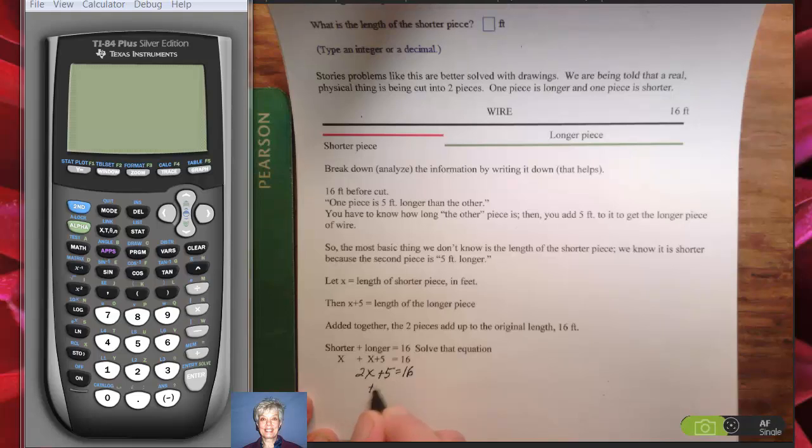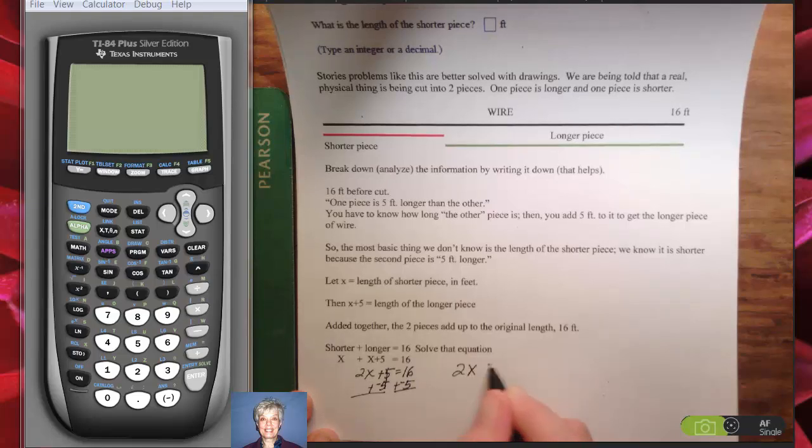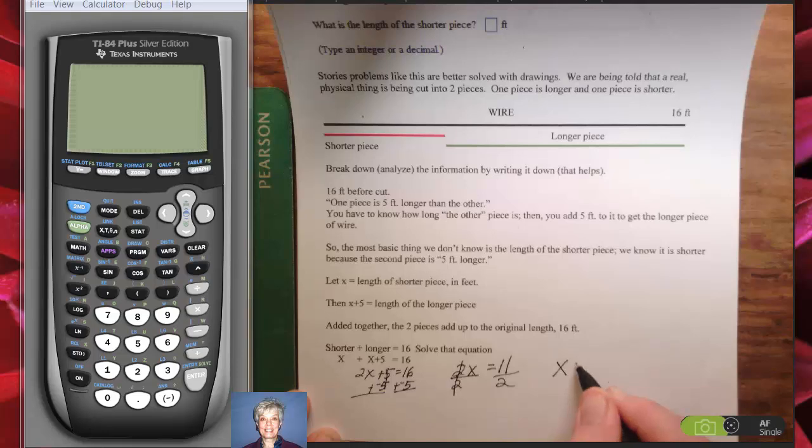I'm going to add negative 5 to both sides of the equation so I can get 2x by itself. I'll have 2x equals 16 plus negative 5 is 11. I have 2 times x equals 11 to get rid of that 2, so I can get x by itself. Since 2 is multiplied by x, I have to do the opposite of multiplication, which is division. Divide by 2, divide by 2. I'll have x equals 11 over 2.